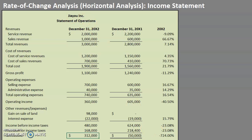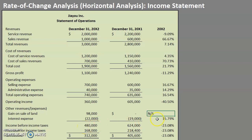Another thing to be aware of is when we go from a balance of zero to a full balance — in this case we can't divide by zero — so this might be one where you would put 'non-applicable,' or maybe even a note, so you can say we had a gain on a sale of land. This isn't something we expect to occur every accounting period, so it's probably a non-recurring item, and you would leave a note telling the user of this report exactly why it went from zero to $98,000.